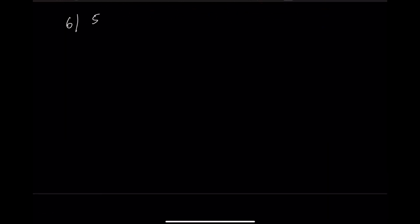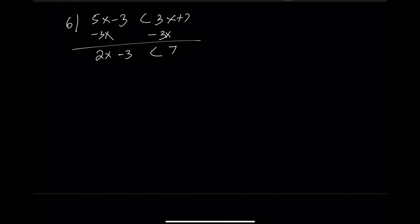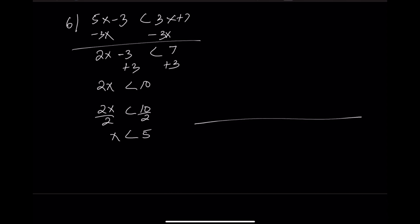Example 6: 5x minus 3 is less than 3x plus 7. Subtract 3x: 2x minus 3 is less than 7. Add 3: 2x is less than 10. Divide by 2: x is less than 5. Draw a number line. Open circle at 5, arrow to the left. The solution is from negative infinity to 5. Interval notation: open parenthesis negative infinity comma 5, close parenthesis.